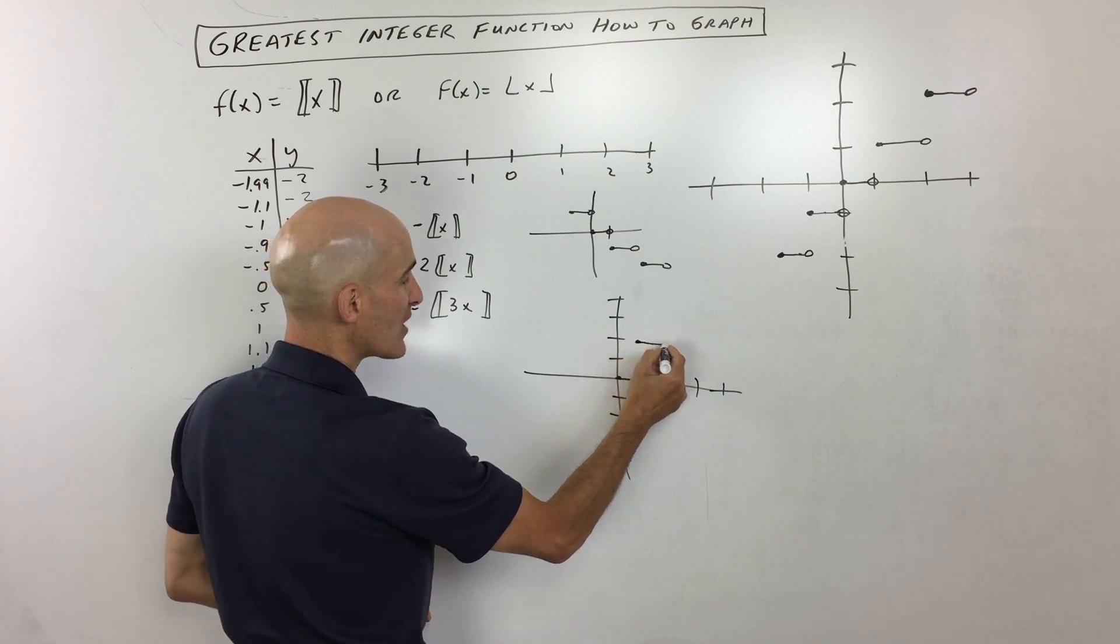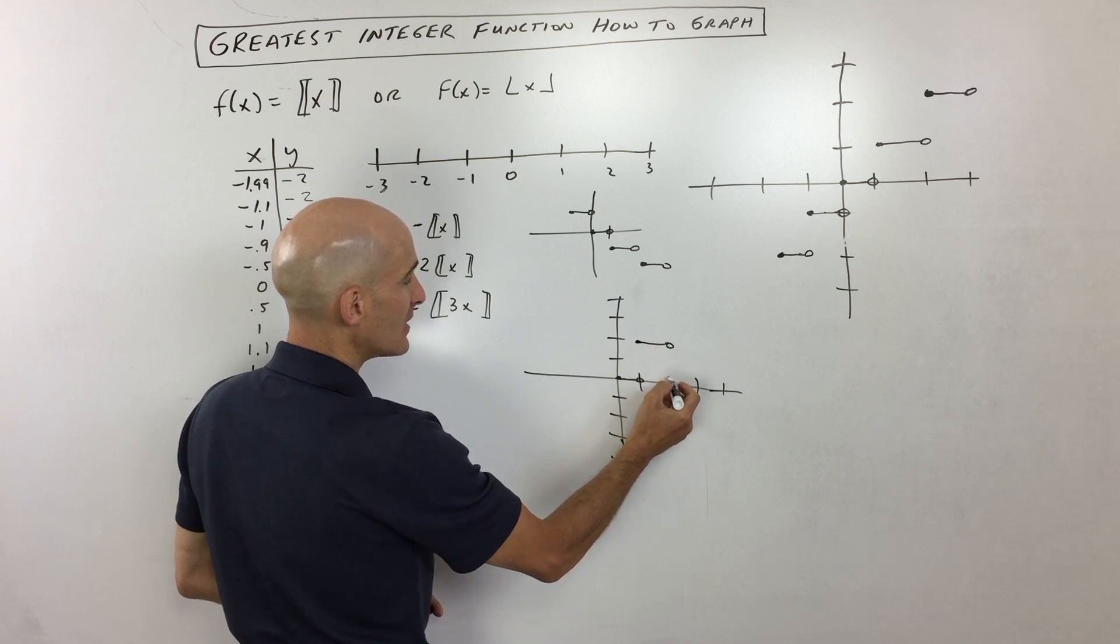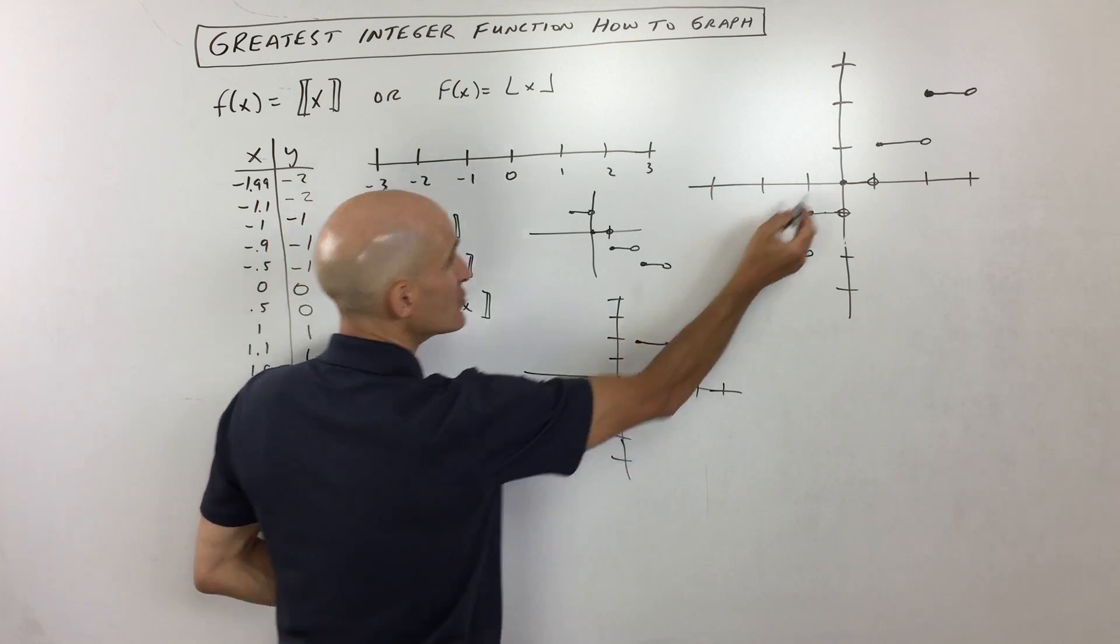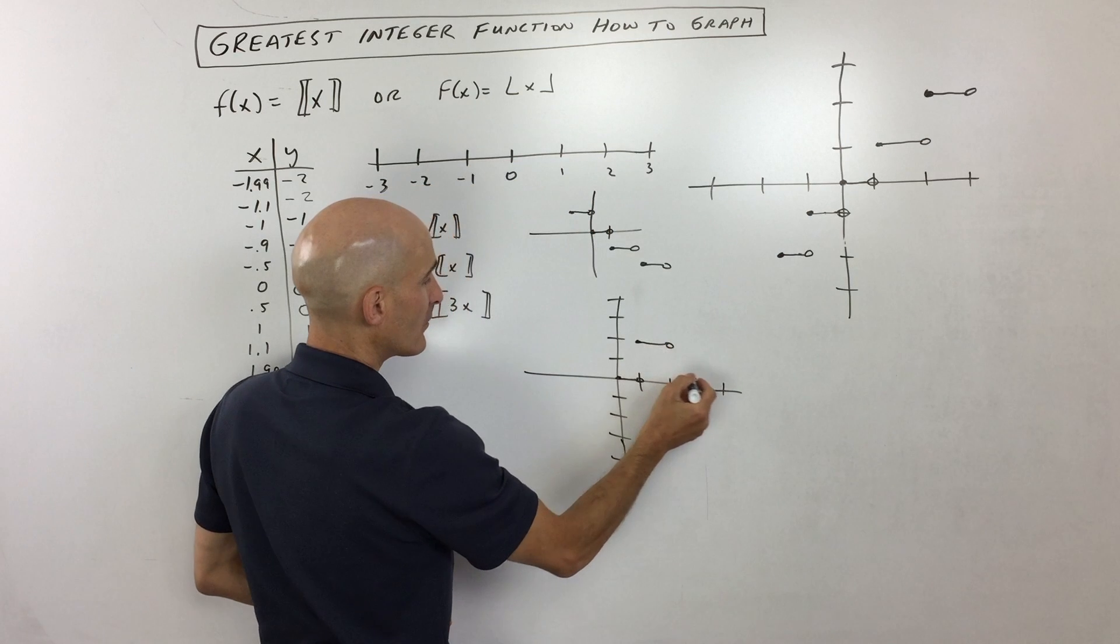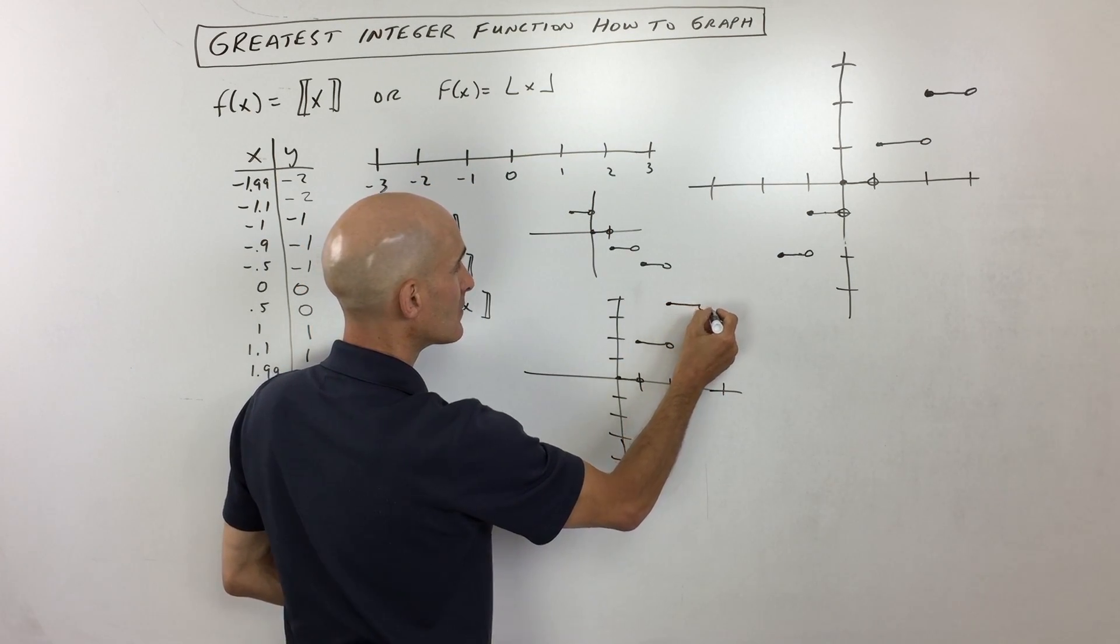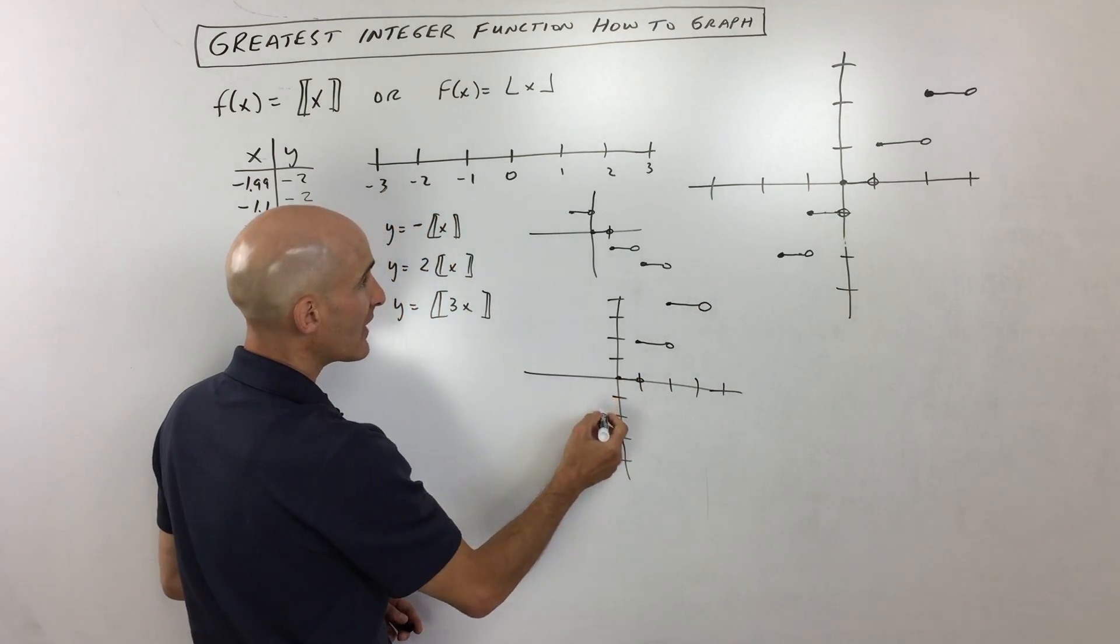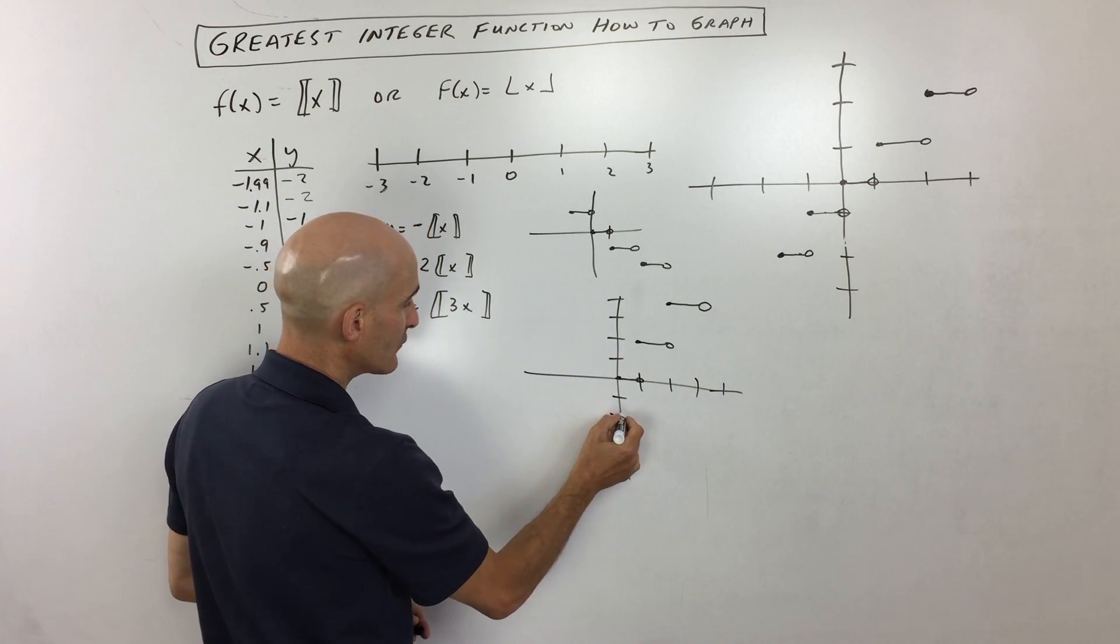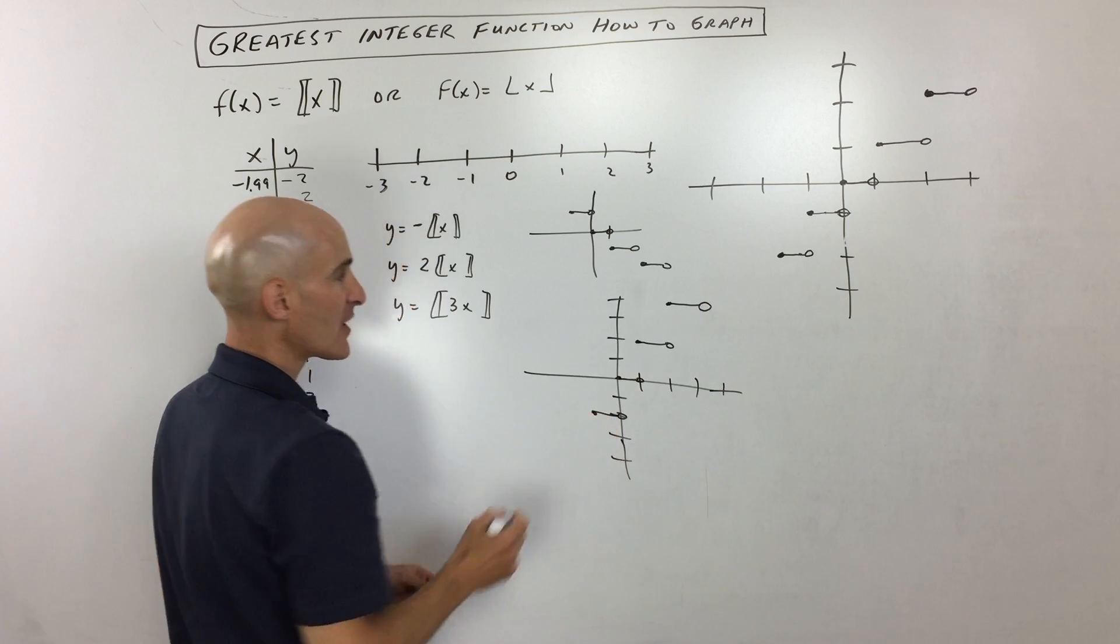Instead of being at over here at 2, now you're going to be at 4. So this is going to jump up like this. And same thing when you're over here at negative 1, now you're going to be down here at negative 2. So you're with me on that? So the one in front, that's going to be a vertical stretch, or if it's like a half, it would be a vertical shrink or compress.